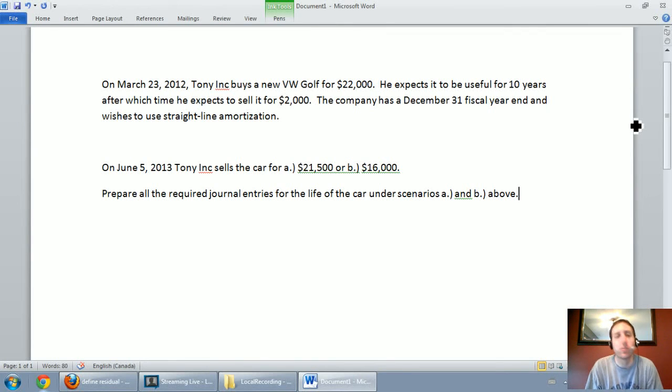Okay, this is the final video of our series on capital assets. In the first three videos we learned how to do straight line amortization, double declining balance amortization, and finally units of production amortization. This video we look at selling an asset at a gain and then at a loss and how to deal with the journal entries of selling an asset.